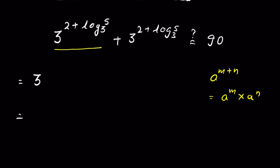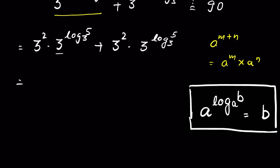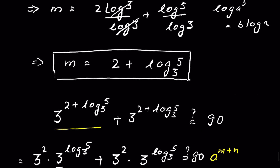Therefore this will be 3 to the power 2 times 3 to the power log 5 base 3, plus 3 to the power 2 times 3 to the power log 5 base 3. Using the rule a to the power log b with base a equals b, we get 9 times 5 plus 9 times 5. That is 45 plus 45, which equals 90. Therefore LHS is equal to RHS, and hence our answer is verified.